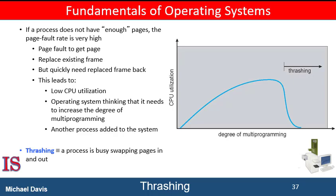At this point, to increase CPU utilization and stop thrashing, we must decrease the degree of multiprogramming. We can limit the effects of thrashing by using a local replacement algorithm or priority replacement algorithm. Local replacement requires that each process select from its own set of allocated frames. Therefore, if one process starts thrashing, it can't take frames from another process and cause the latter to thrash as well.